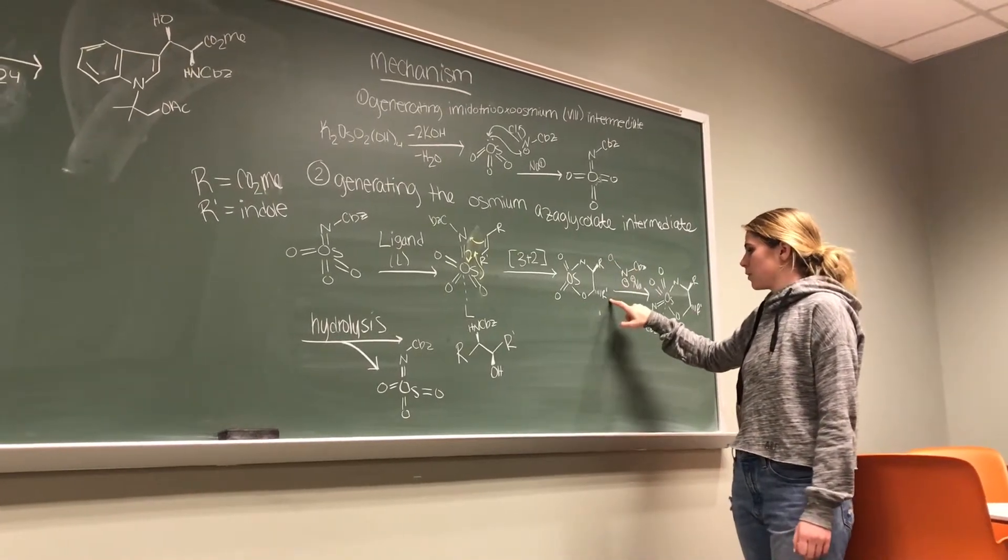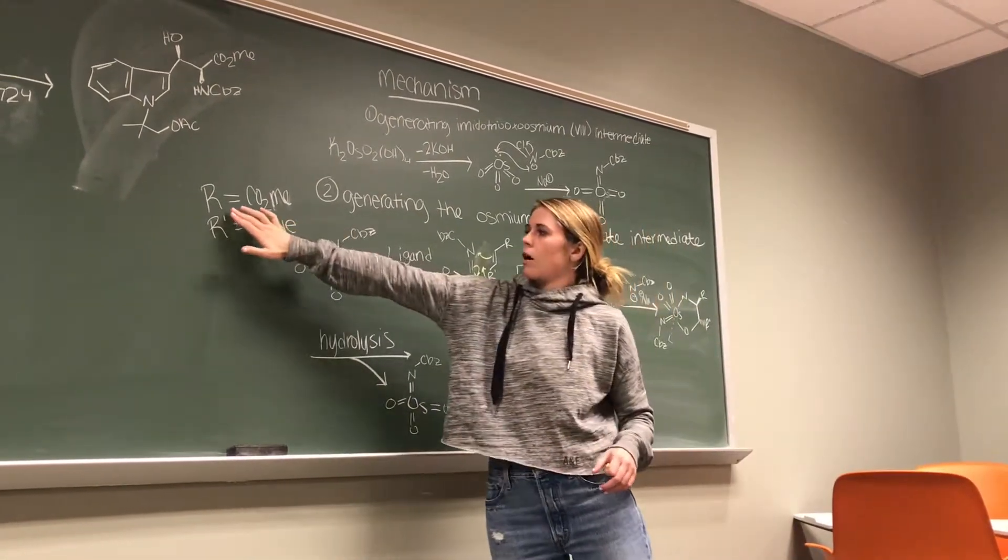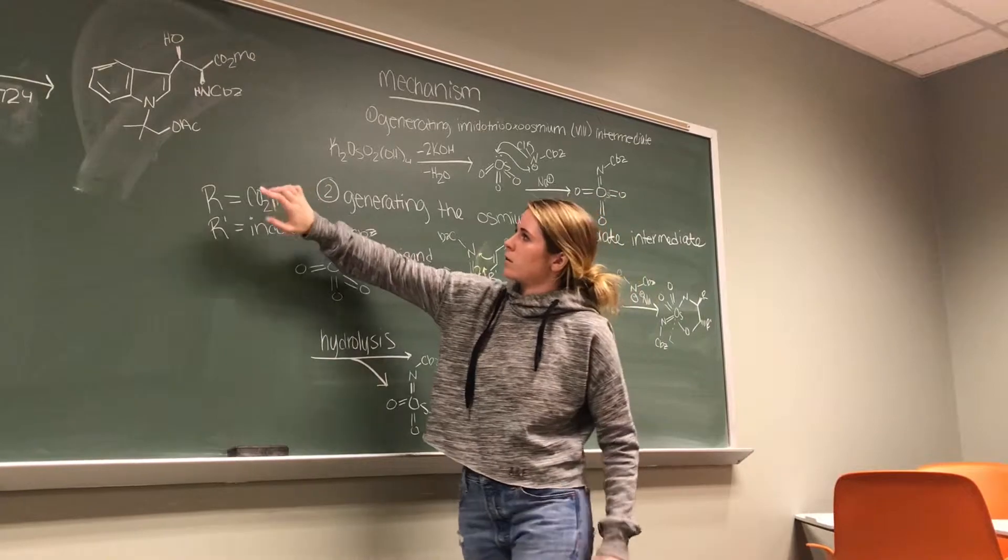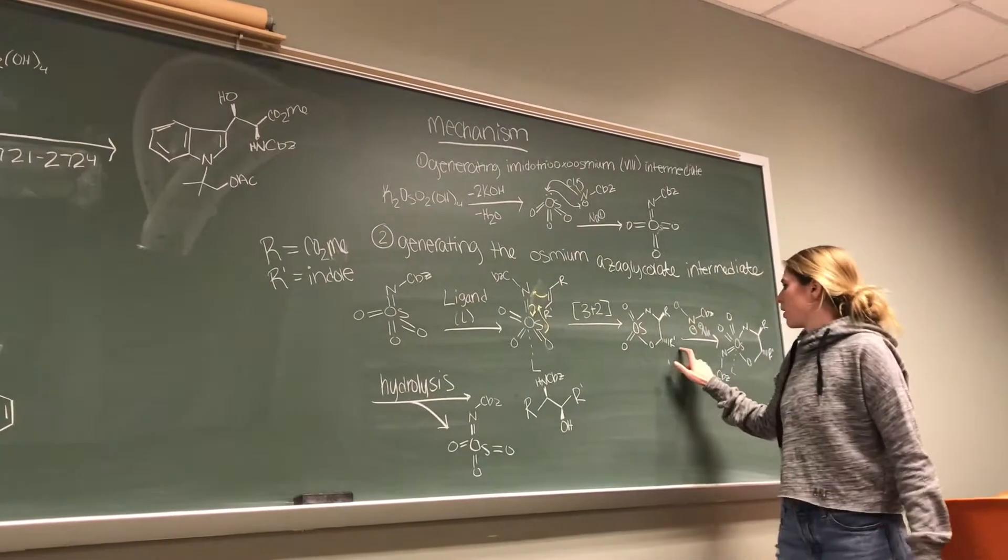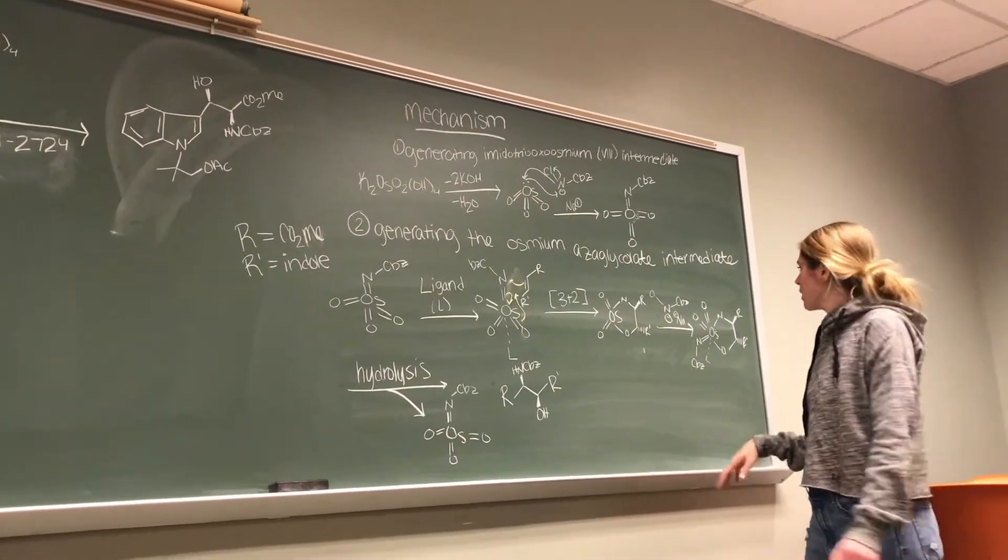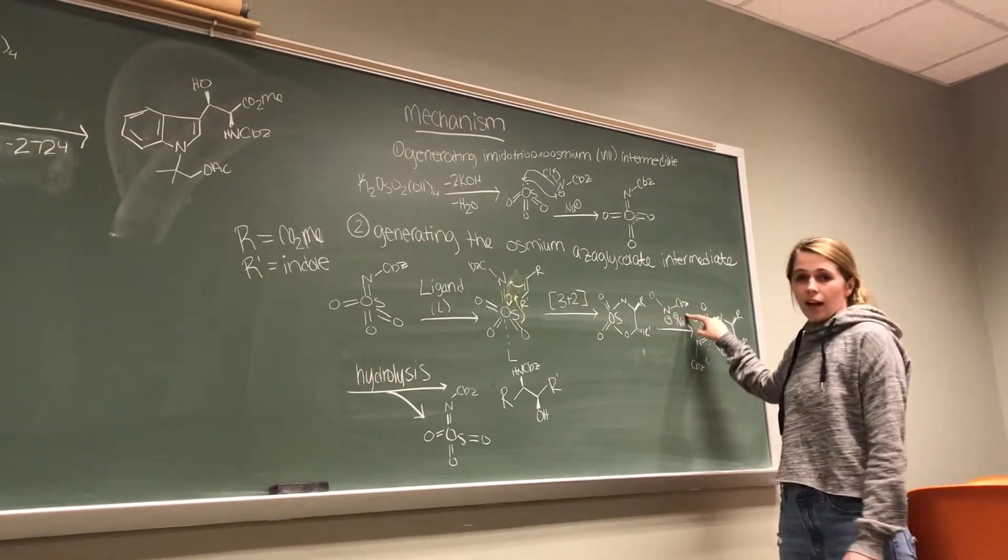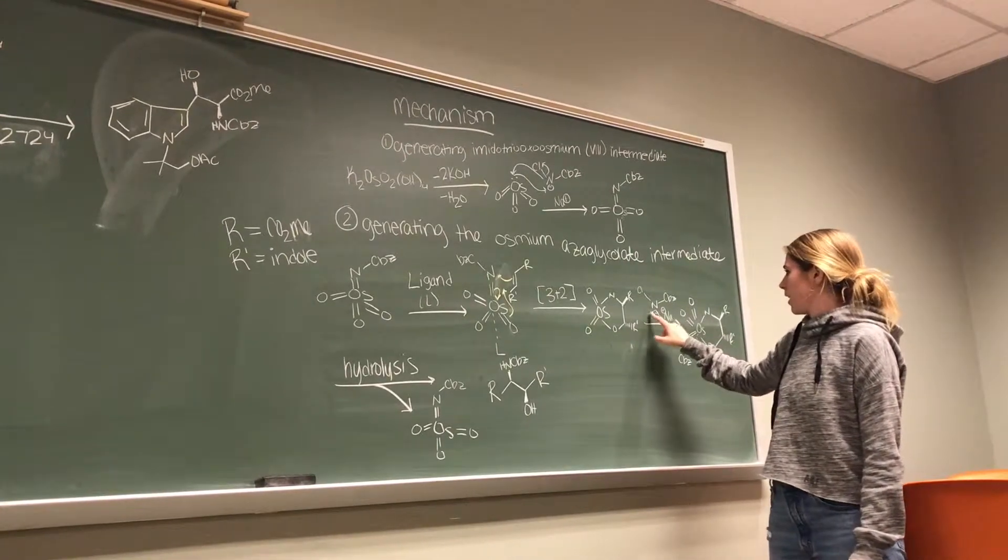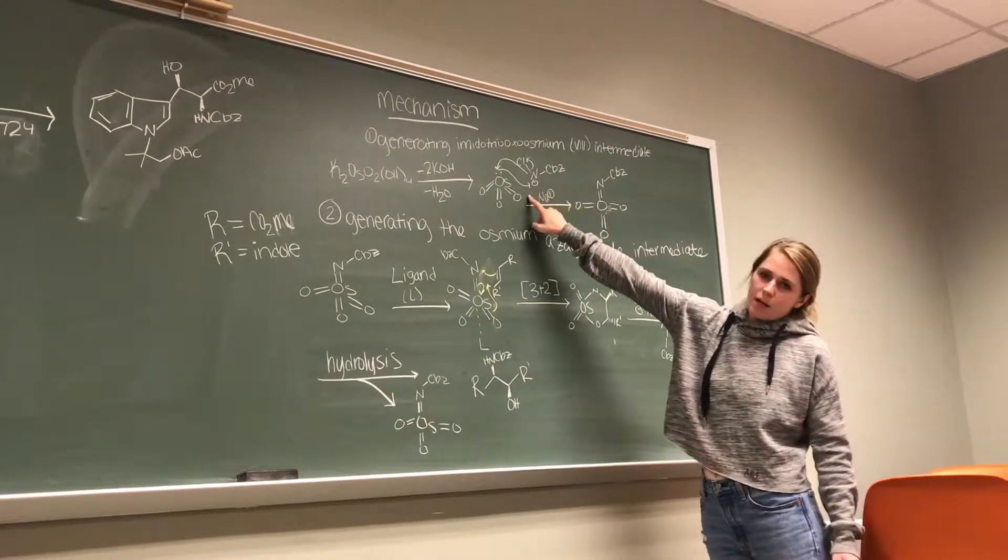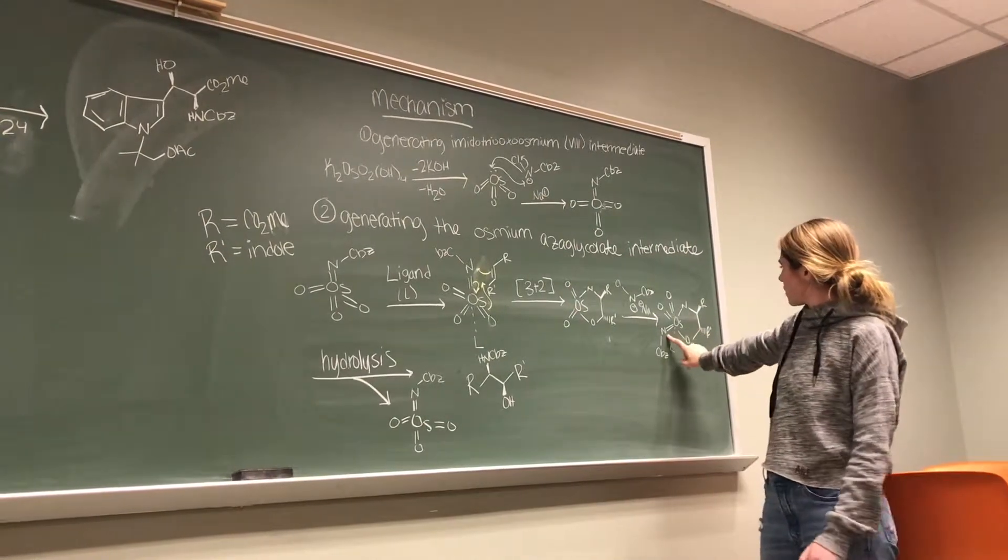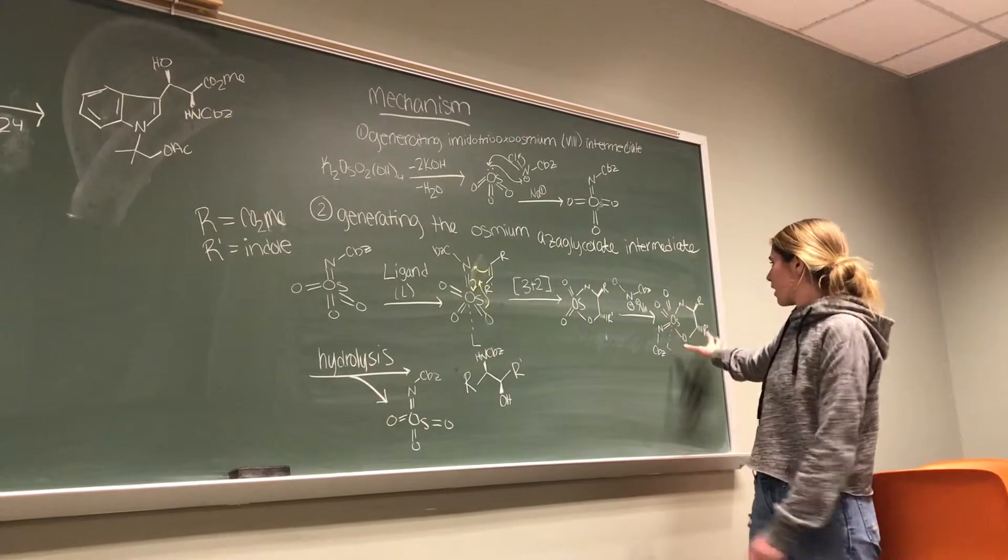And so we have our R and R' groups. And just for simplicity, I shorthanded them. So the R group is the carbomethoxy group, which is here. And then the R' group is the indole. So we're just using the R and R' in the mechanism rather than drawing out the entire compound. So then from, this is our osmium azoglycolate intermediate. Then our salt actually comes back in with our sodium dissociated and our negatively charged nitrogen. And then it will undergo a similar step that we saw up here. And forms a double bond with the osmium. And our ligand is still coordinated and we still have this five-membered ring. So there's a lot going on.